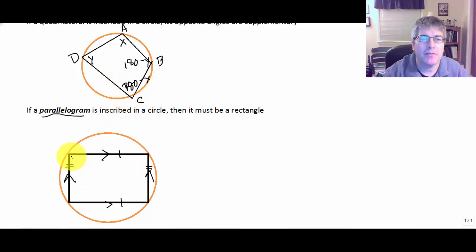Remember that the opposite angles must be supplements. But if this is a parallelogram, don't the interior angles on the same side of the transversal have to be supplementary? So if we have opposite angles being x and 180 minus x, and the consecutive angles, or the interior angles on the same side of the transversal, are supplementary...